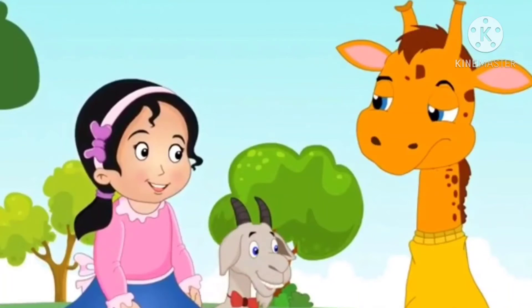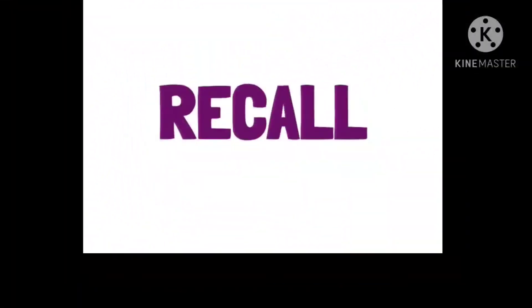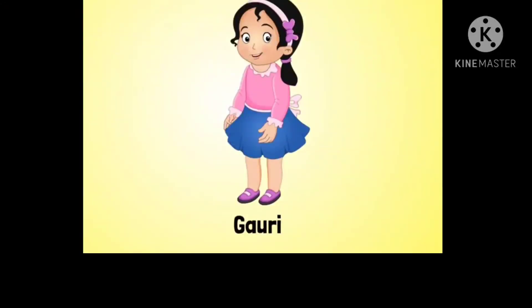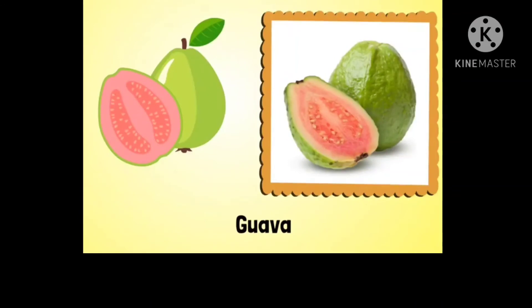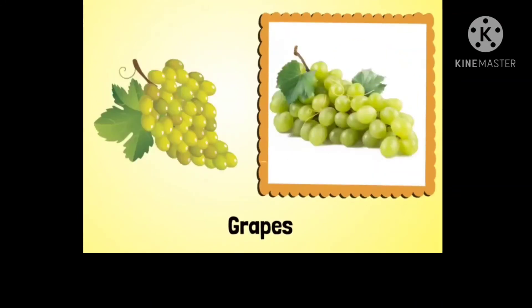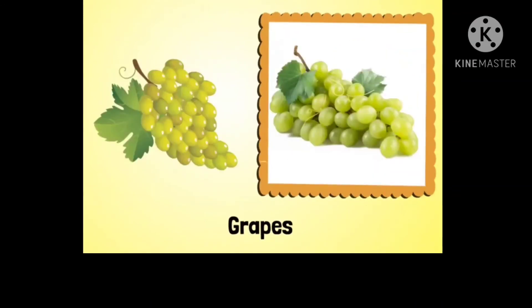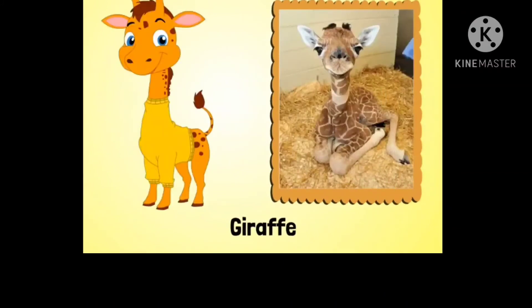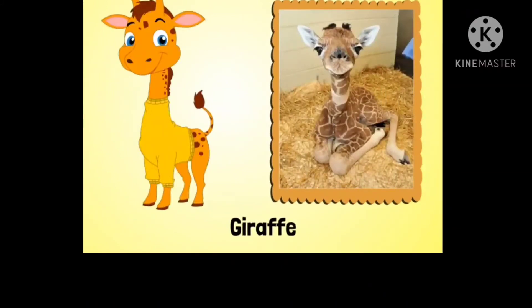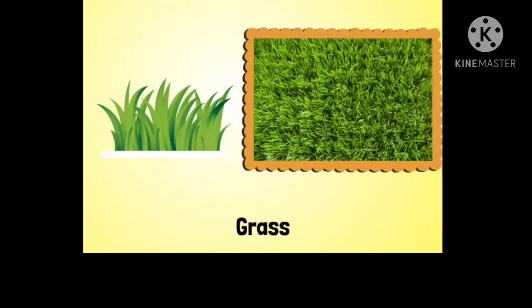Children, do you like the story of our little Gowri and Giraffe? Very good. Let's recall the words we have gone through in the story: G for Gowri, G for guava, G for grapes, G for goat, G for giraffe, G for garden, G for grass.